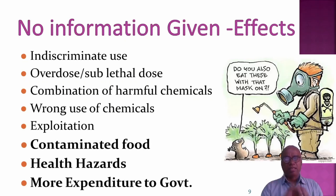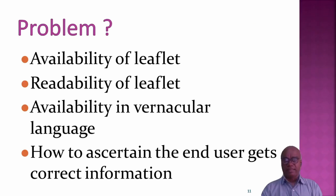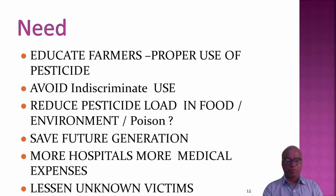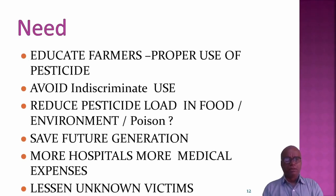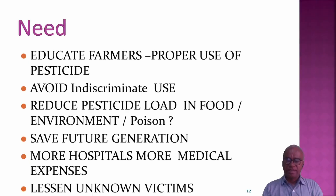Moreover, when we consume contaminated food, we face health hazards and more expenditure to the government. The problems are: availability of leaflets, readability of leaflets, and availability in vernacular language. How do we ensure the end user gets correct information? We, as educated people, need to educate farmers for proper use of pesticides, to avoid indiscriminate use, and to reduce the pesticide load in food and the environment. We need to save future generations from pesticide poisoning.